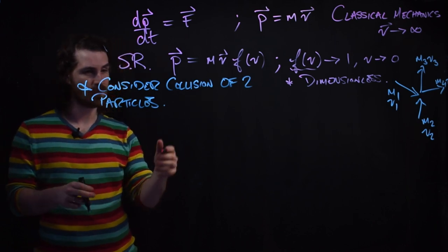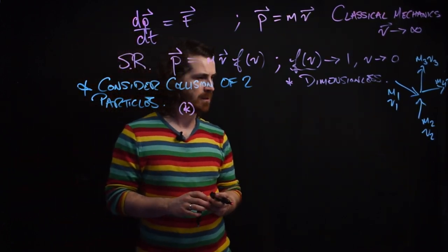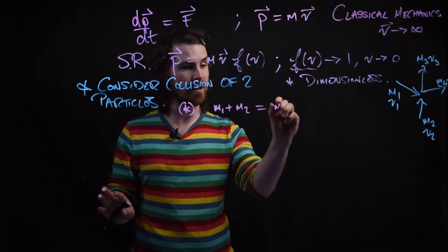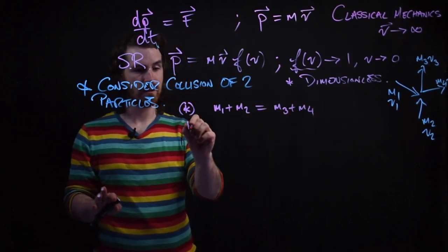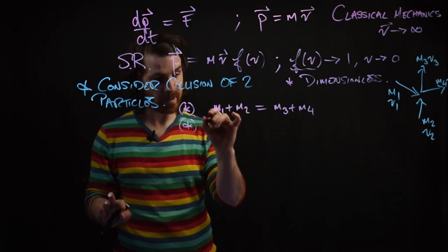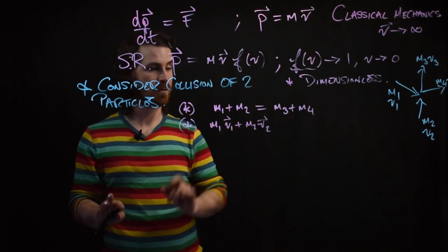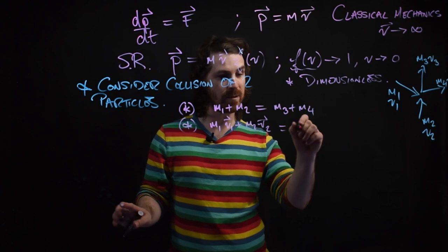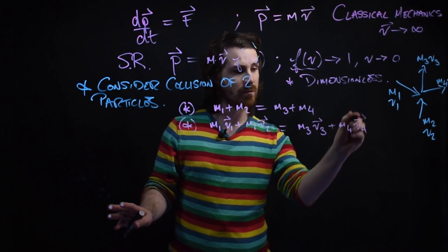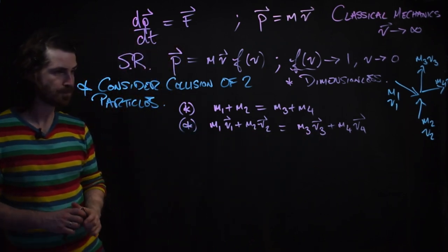We want to write down conservation of momentum and of mass: m1 plus m2 should equal m3 plus m4. And conservation of momentum: m1 v1 plus m2 v2 equals m3 v3 plus m4 v4. That's the initial total momentum equaling the final momentum — two things going in and two things coming out.